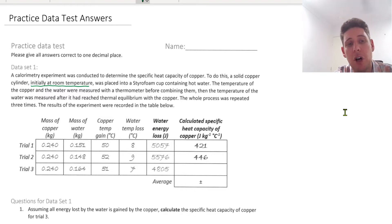The temperature of the copper and the water were measured with a thermometer before combining them. Then the temperature of the water was measured after it had reached thermal equilibrium with the copper. The whole process was repeated three times. The results of the experiment were recorded in the table below.